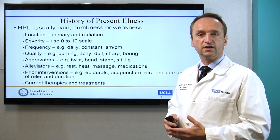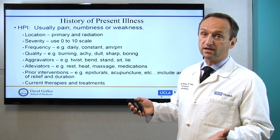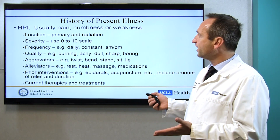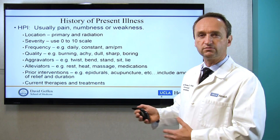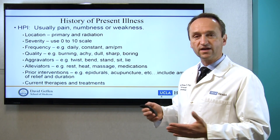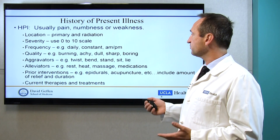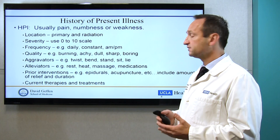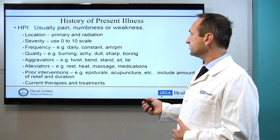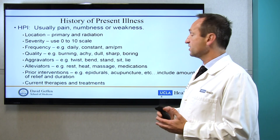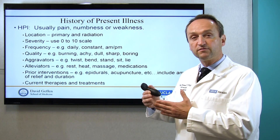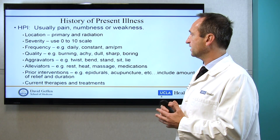What are we looking for in the history when a patient comes to us? First, it's pain — most of the time it's pain, sometimes also numbness and weakness. What type of pain? We try to locate it: is it primary pain, does it radiate from the back to the leg or arm? What's the severity — we use a scale from 0 to 10. When does the pain occur and what is the frequency — is it daily, constant, morning or evening, at night, or with activity? What is the quality — is it burning, achy, or radiating? Some types of pain can lead us to think whether it's nerve pain from nerve pressure, or pain from the bone or ligament. What are the aggravating factors — a twist, a bend, standing, walking, or sitting?